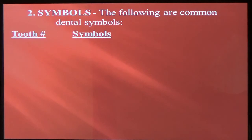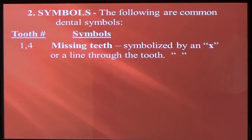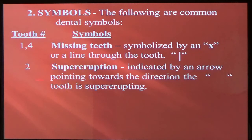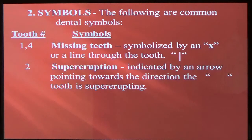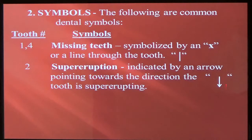Symbols: for missing teeth, it's symbolized by an X or a line through the tooth. Supereruption of a tooth is drifting in a downward or upward direction because there's a missing opposing tooth. If it's an upper tooth and the bottom tooth is missing, the tooth is going to supererupt downward; if it's a bottom tooth, it's going to supererupt upward, trying to hit something until it comes into occlusion. You're going to draw an arrow right next to the tooth in the way that it's erupting.